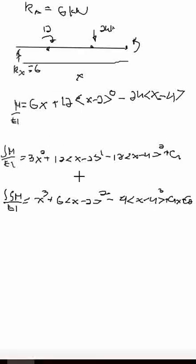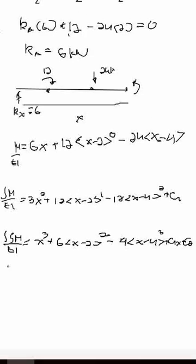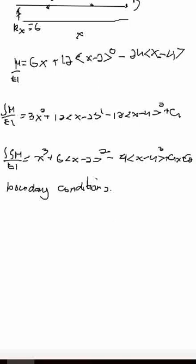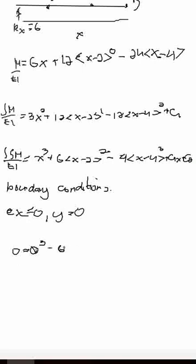Applying the first boundary condition: at X equals 0, deflection Y equals 0. Substituting into the deflection equation, the terms with (X minus 2) and (X minus 4) are neglected since X is less than those values. This gives: 0 equals 0 plus C1 times 0 plus C2, therefore C2 equals 0.